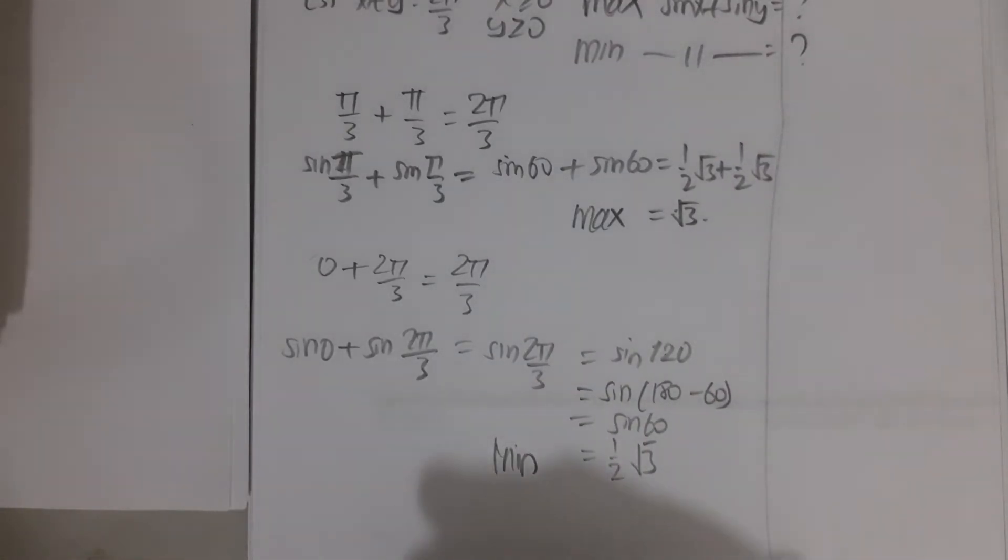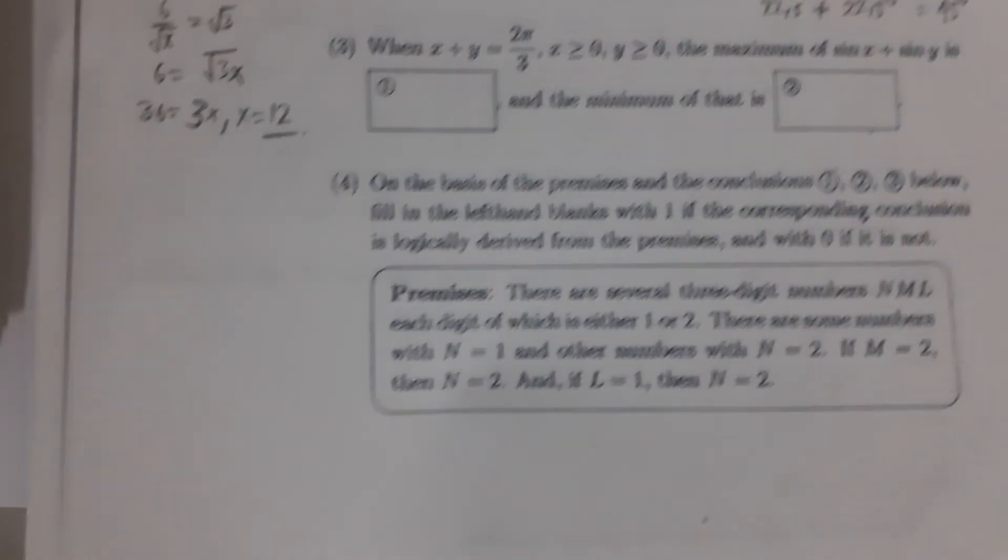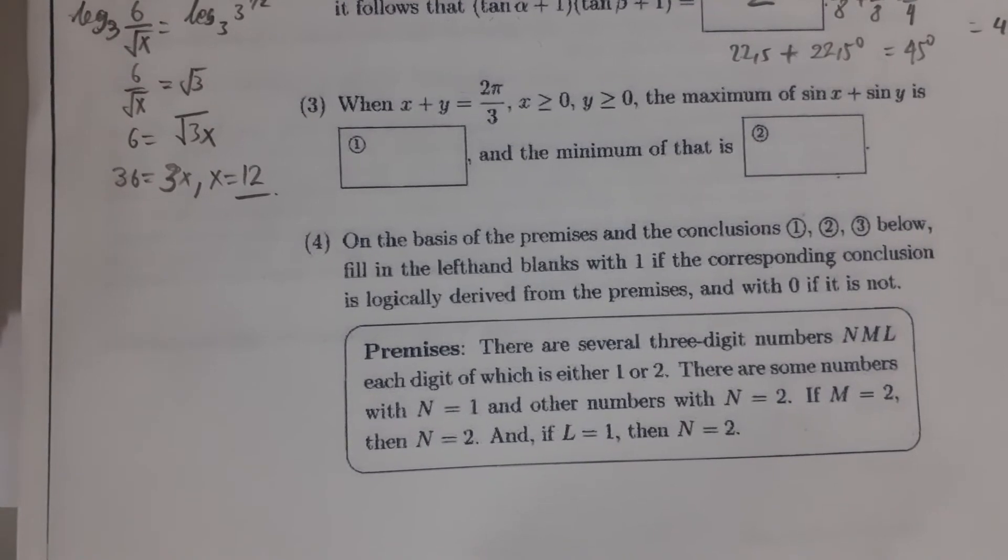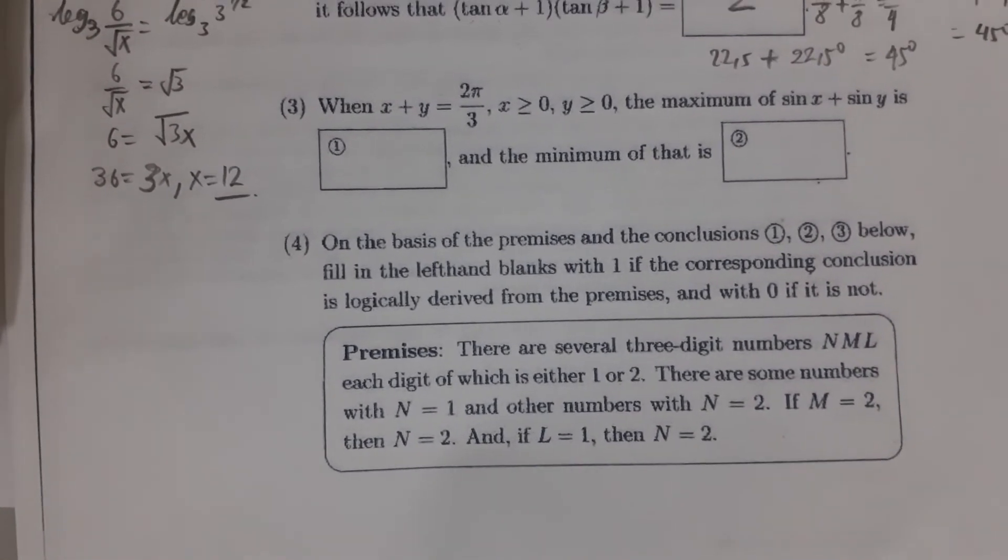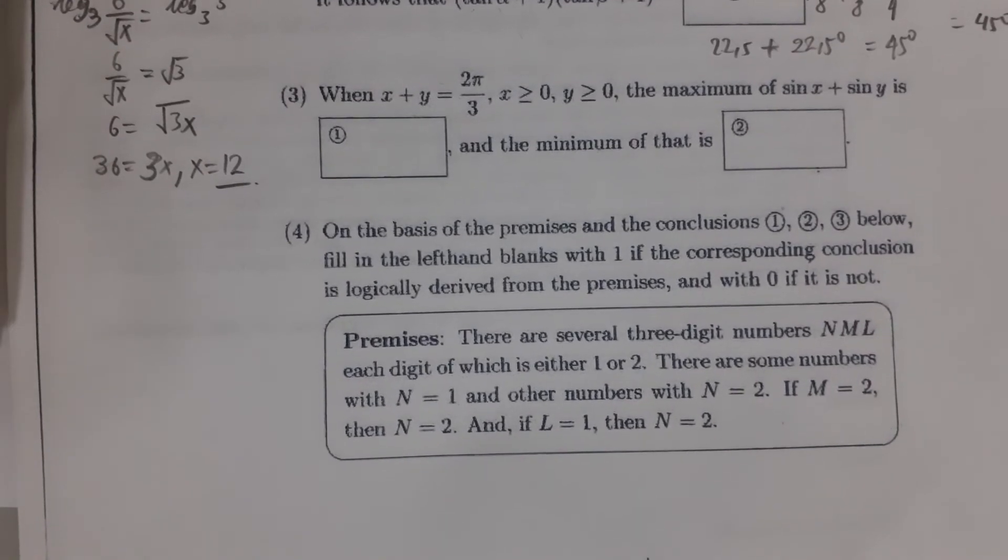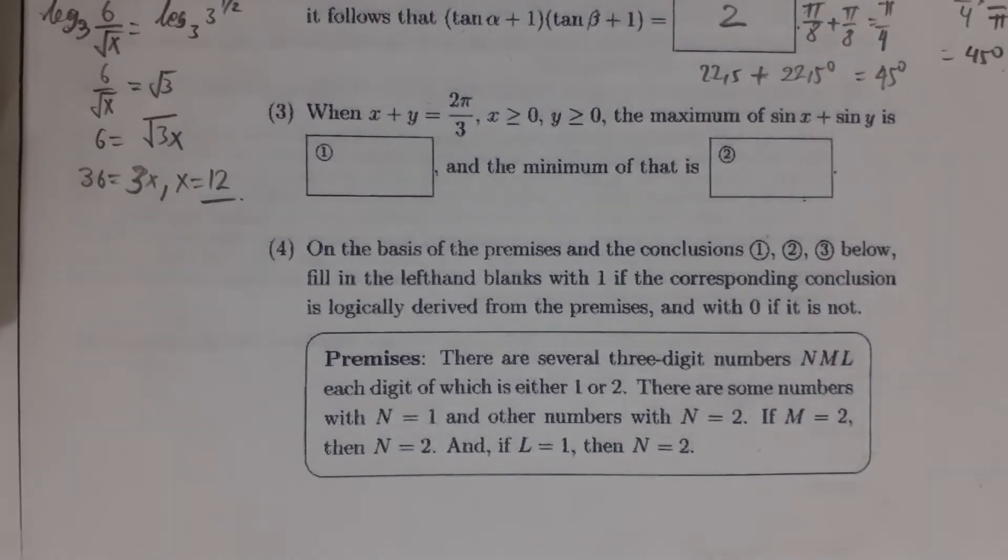So to answer questions like this, where x + y = 2π/3 and we need to find the maximum and minimum of sin x + sin y, we should find the simplest addition. We should not try to be too smart by choosing π/4 or π/6, because that proves to be too complicated.